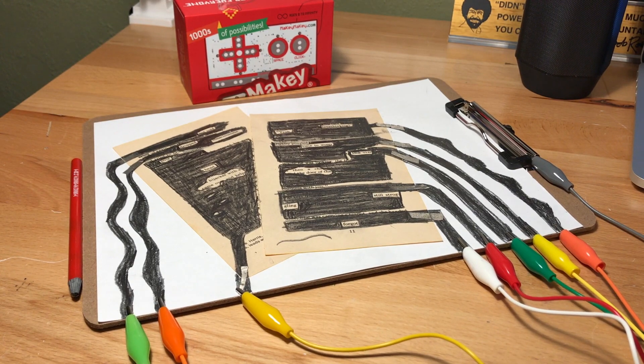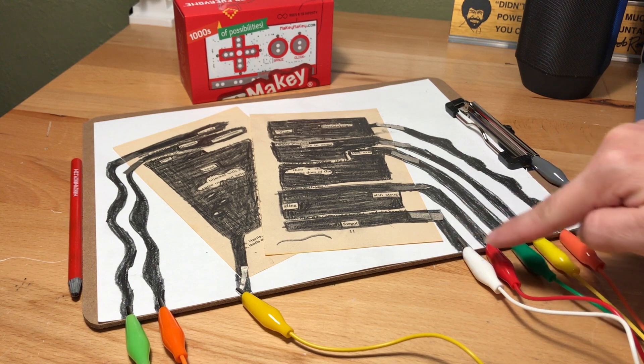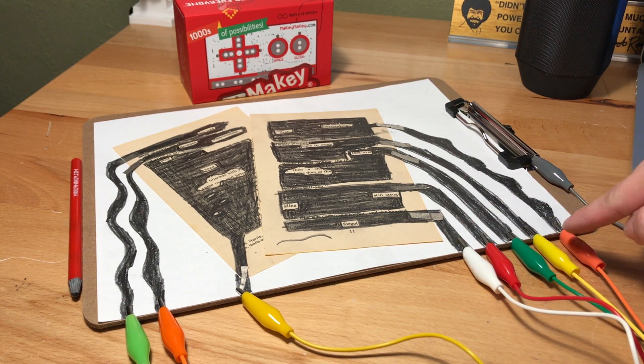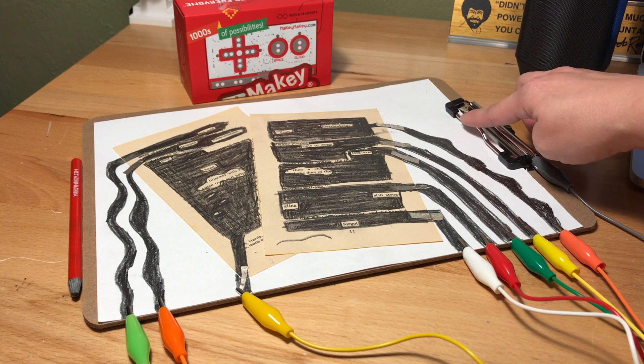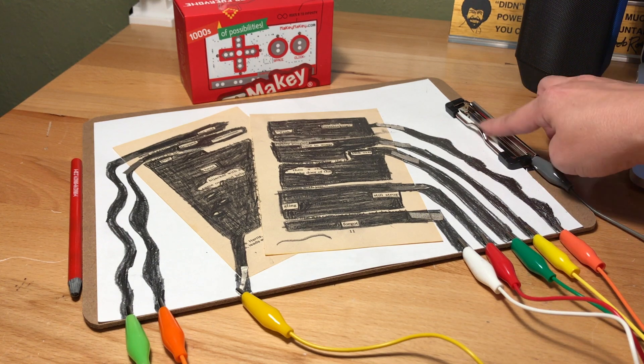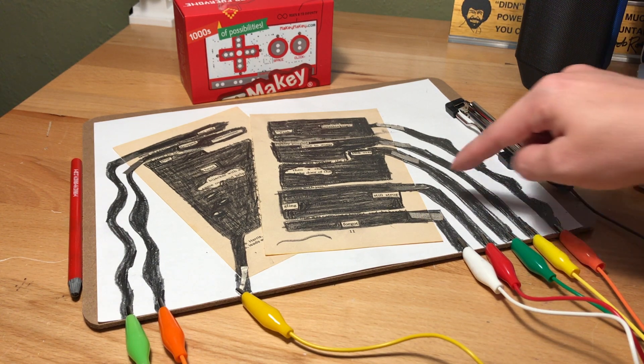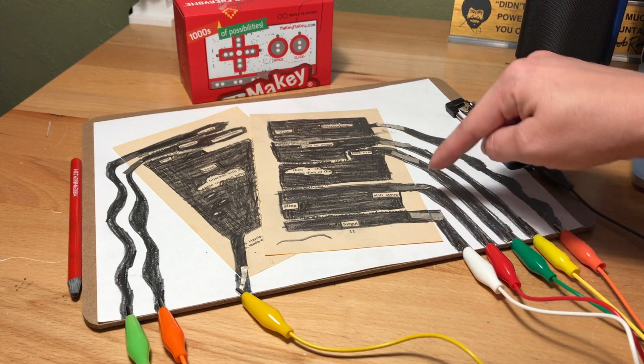Here's my more advanced blackout poetry example. I put it on a clipboard so I could attach my alligator clips to a nice steady surface. I'm actually using the metal on the clip as earth. I got that idea from Chibitronics, and our guide has that in it.